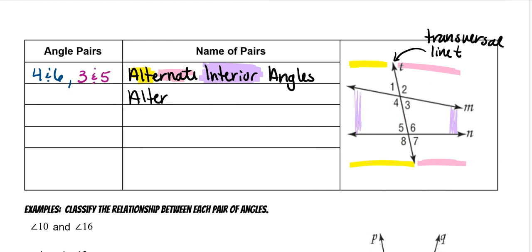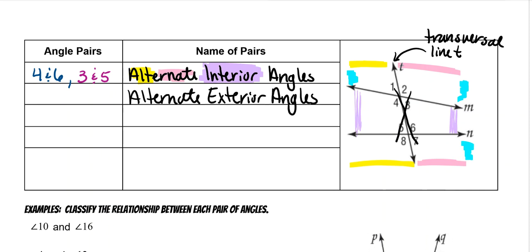Next we have alternate exterior angles, which means they're going to be across the transversal on the outside — crisscross on the outside. The exterior pairs are angles one and seven, and angles two and eight.